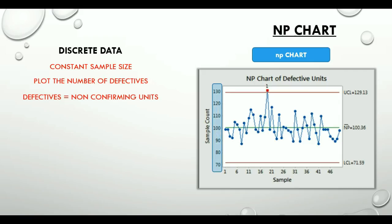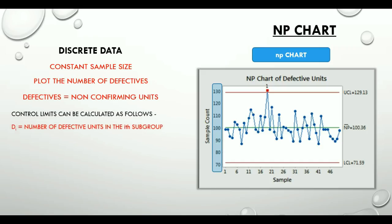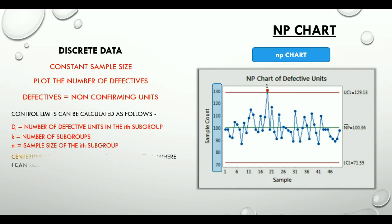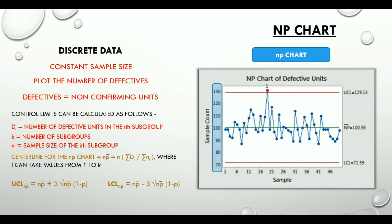To calculate the control limits for this chart, what we need is DI — the number of defective units in the ith subgroup — K, which is the number of subgroups, and NI, which is the sample size of the ith subgroup. The centerline of the NP chart, or NP-bar, is equal to N multiplied by the summation of DI divided by the summation of NI, where I takes values from 1 to K. The upper and lower control limits for an NP chart are NP-bar ± 3 times the square root of NP-bar multiplied by (1 minus P-bar).